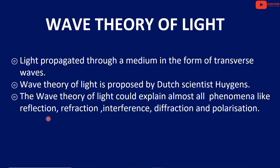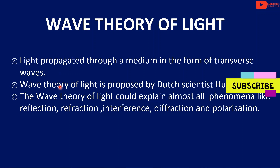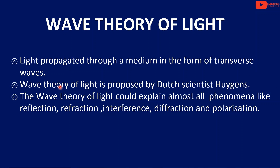So this theory comes from Christian Huygens. Christian Huygens' theory of light is called the wave nature — light is a transverse wave in nature. Light propagates through a medium in the form of transverse waves. This theory was proposed by Dutch scientist Huygens, and the wave theory of light could explain almost all phenomena like reflection, refraction, interference, diffraction and polarization.